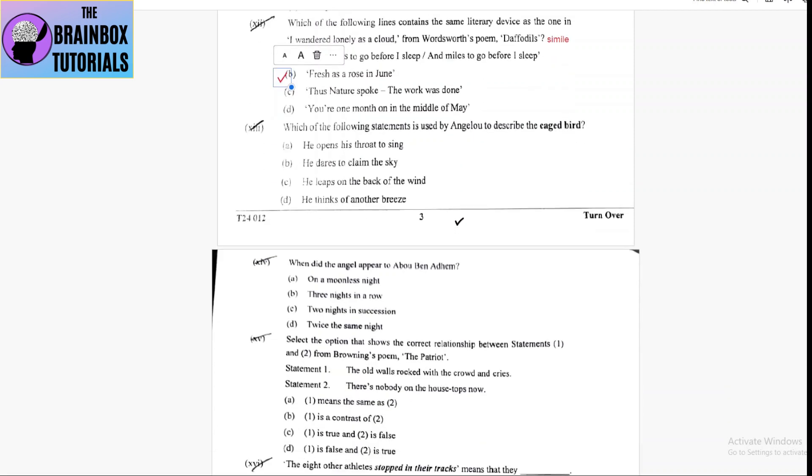Now, coming to next one, which of the following statements is used by Angelou to describe the caged bird? Which is used by Angelou? Number A, he opens his throat to sing. Yes, it was used.